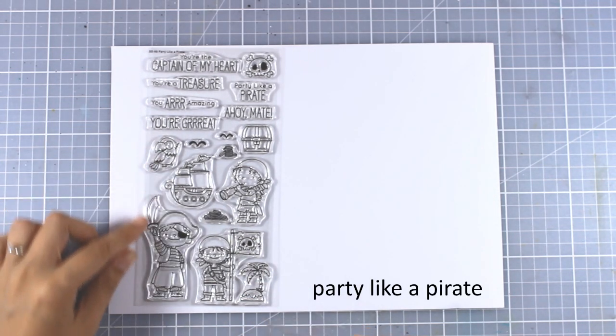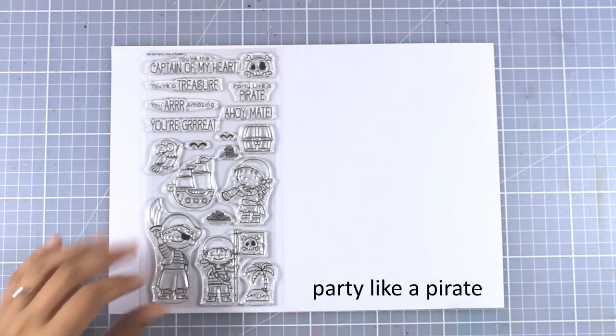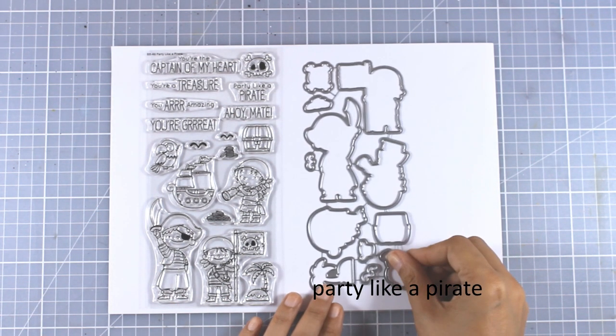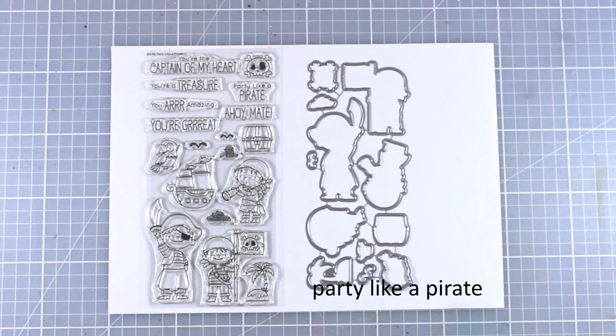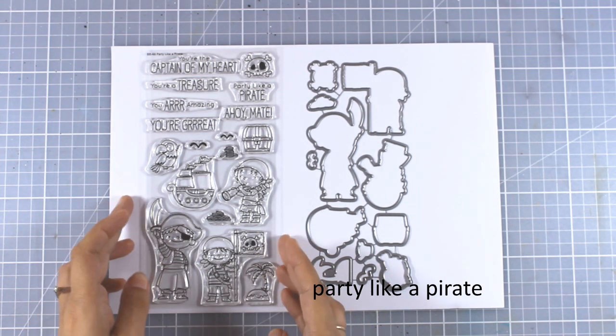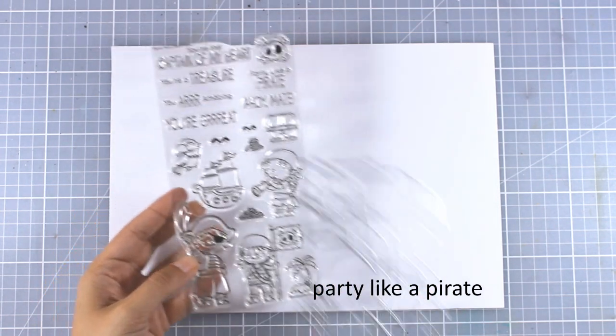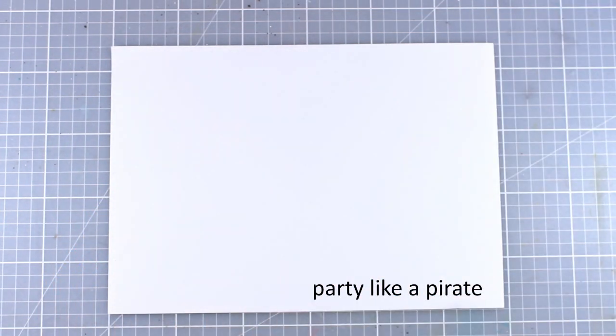This is Party Like a Pirate. It comes with three adorable pirates, an island, treasure chests, a parrot, a boat, and lots of sentiments that match perfectly the pirate theme. I think this is a great stamp set to have on hand for boy-themed cards.